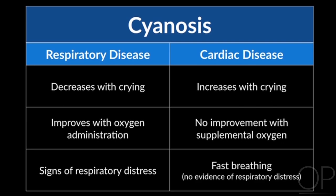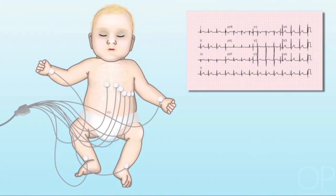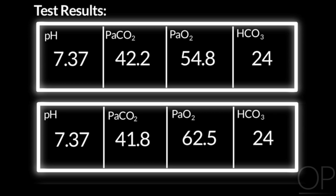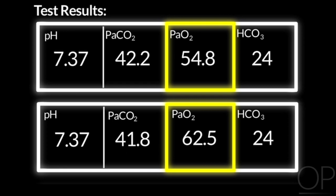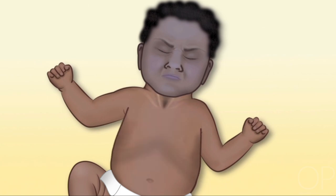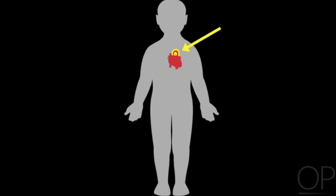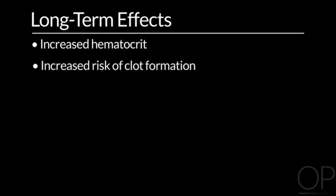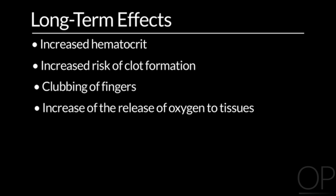Tests to help diagnose respiratory or cardiac disease include a 12-lead electrocardiogram, a chest radiograph, and a hyperoxia test that evaluates the oxygen content of the blood with and without supplemental oxygen. Signs of cyanosis with congenital heart disease include bluish discoloration of skin and mucous membranes, increased respiratory rate and effort, irritability or lethargy, decreased blood flow to the body, decreased urine output, and metabolic acidosis. Long-term effects of chronic cyanosis include increased hematocrit, thickening of the blood, increased risk of clot formation, clubbing of fingers, and an increase in the release of oxygen to the tissues.